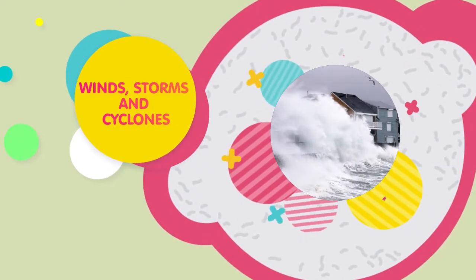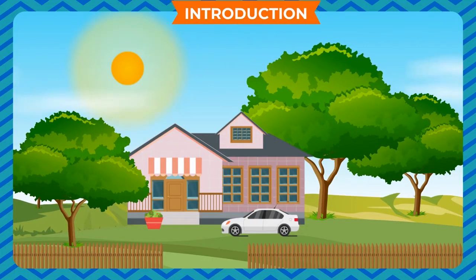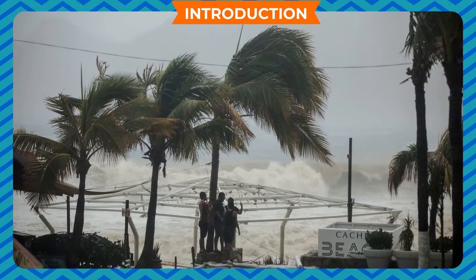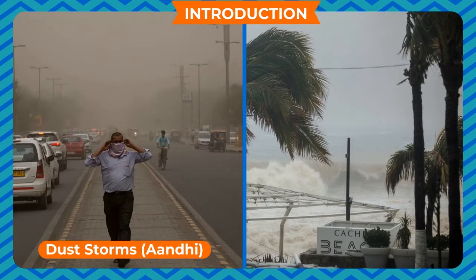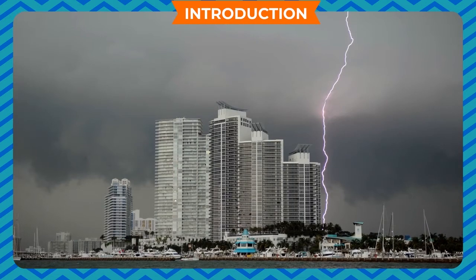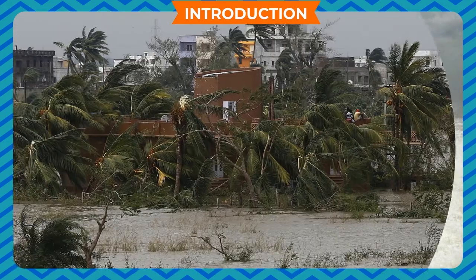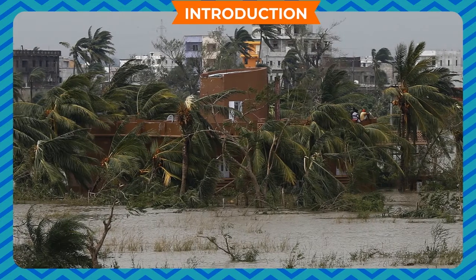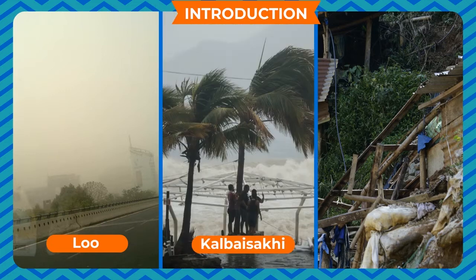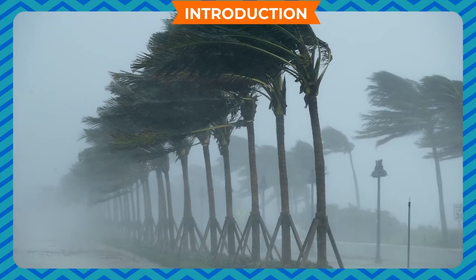Winds, storms, and cyclones — introduction. Moving air is called wind. There are various forms of wind. Storms can be of various forms like dust storms, Andhi, Kalbaisakhi, or Loo. These are generally accompanied by thunder, lightning, and torrential rains. Cyclones generally hit the eastern coast of India every year and cause a lot of damage to life and property. Whether it is Loo, Kalbaisakhi, or cyclone, all of them have one thing in common — high speed wind.